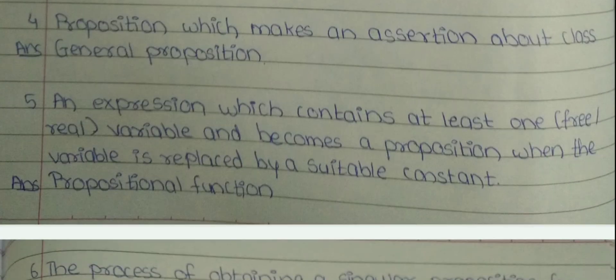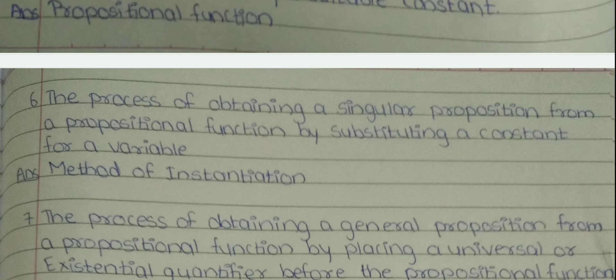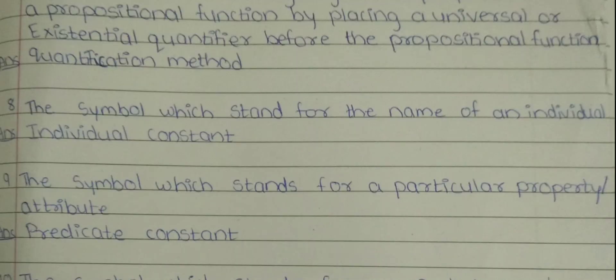Fifth, an expression which contains at least one free variable and becomes a proposition when the variable is replaced by a suitable constant — the answer is propositional function. Sixth, the process of obtaining a singular proposition from a propositional function by substituting a constant for a variable — the answer is method of instantiation. Seventh, the process of obtaining a general proposition from a propositional function by placing a universal or existential quantifier before the propositional function — the answer is quantification method. Eighth, the symbol which stands for the name of an individual — the answer is individual constant.